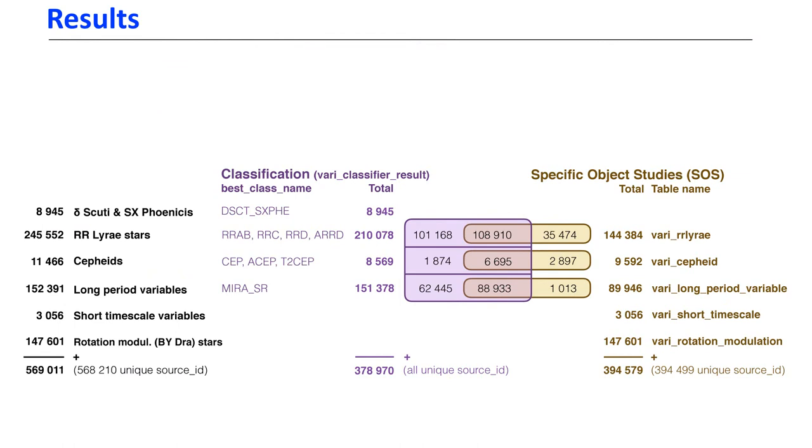The Cepheids and RR Lyrae were processed and analyzed by Italian groups in Bologna and Naples. There are long period variables analyzed by a group in Vienna and rotation modulation in Italy in Catania.